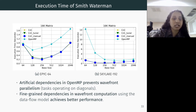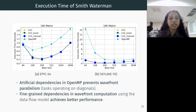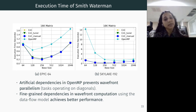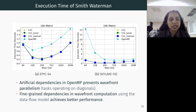Here are results for the Smith-Waterman algorithm. This exhibits wave-front type parallelism, and OpenMP due to its artificial dependencies is not able to generate all tasks to fully utilize resources. Even as we scale up the problem size, OpenMP consistently produces less performance for all base sizes. All variants of CNC perform similarly for this benchmark, with no significant performance differences observed.